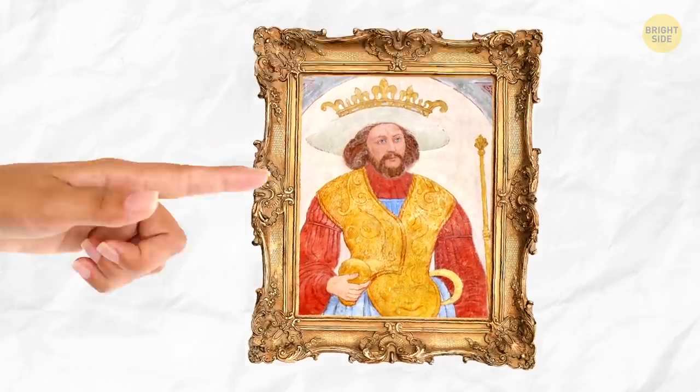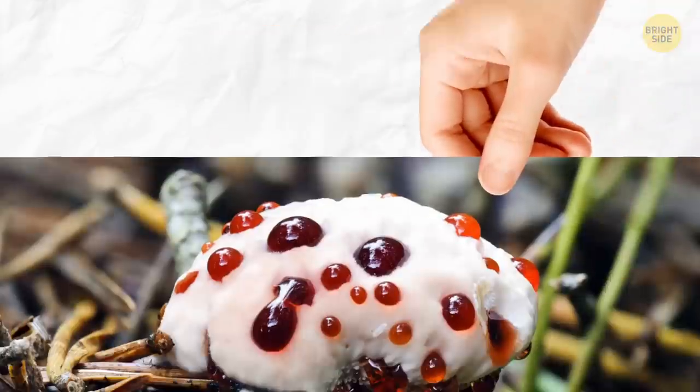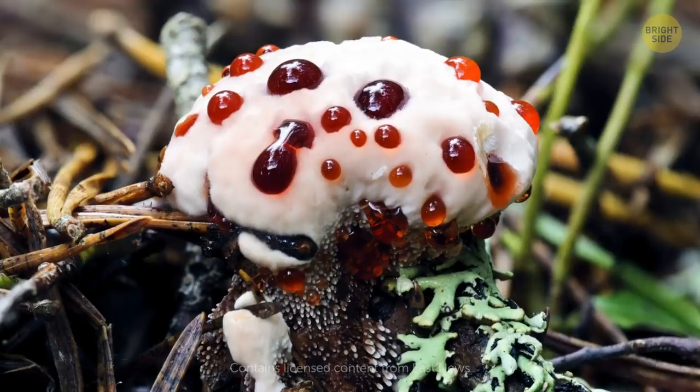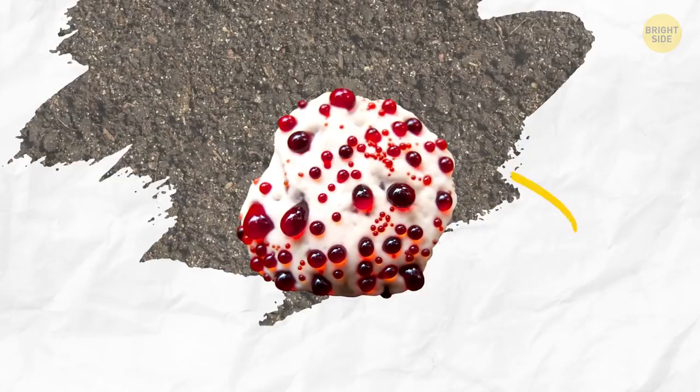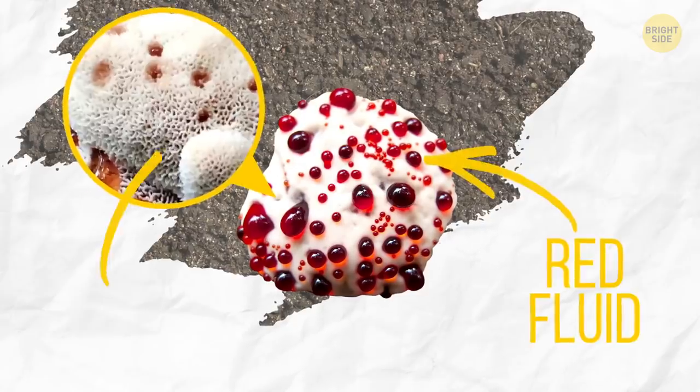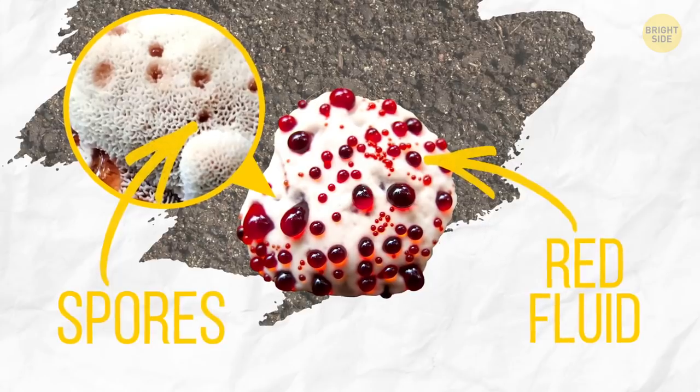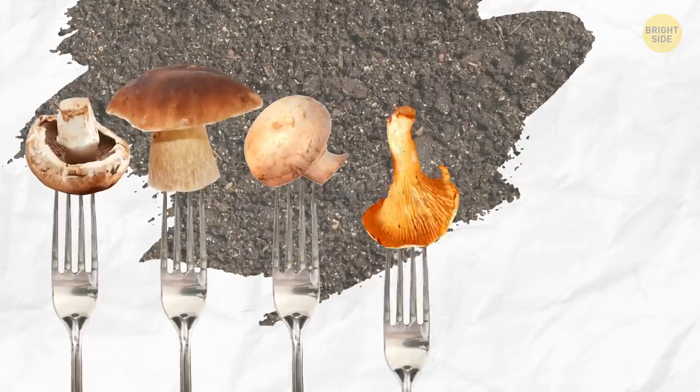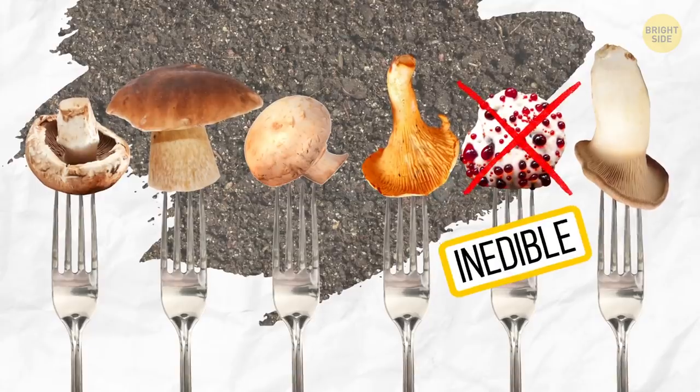The bleeding tooth fungus, not to be confused with Bluetooth, looks like it has drops of blood all over it. But don't be alarmed, it's simply the fungus's inner thick red fluid oozing through its pores. It's inedible, of course. Not that you were considering grabbing a fork.